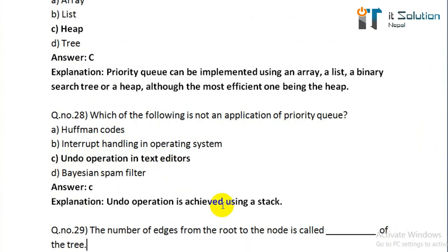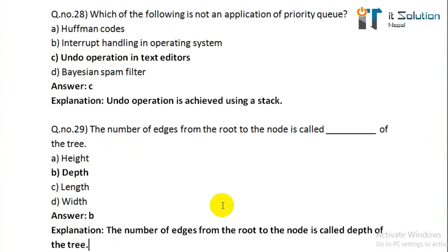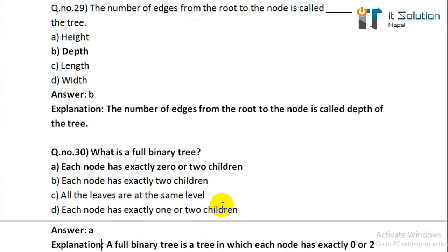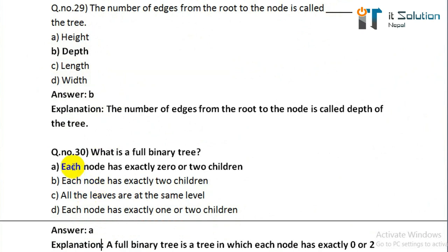Question number twenty-nine: the number of edges from the root to a node is called? Options: A height, B depth, C length, D weight. Its correct answer is option B, depth. Question number thirty: what is a full binary tree? Each node has exactly zero or two children — it is called a full binary tree. Its correct answer is option A.